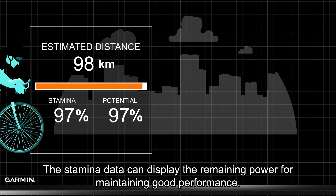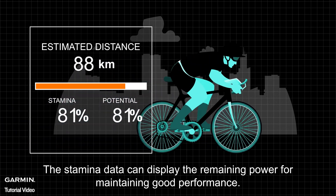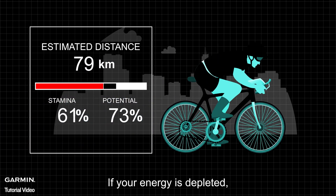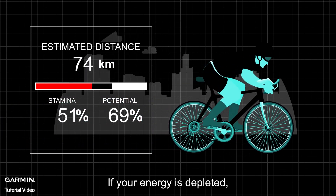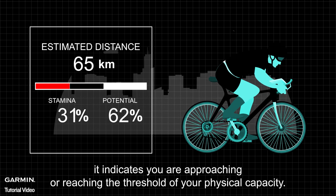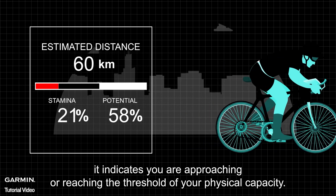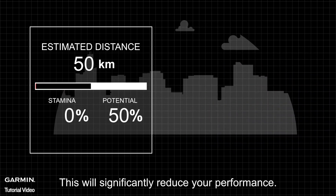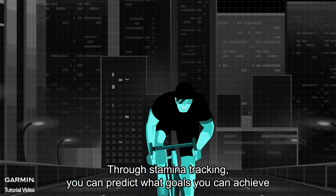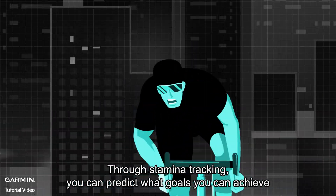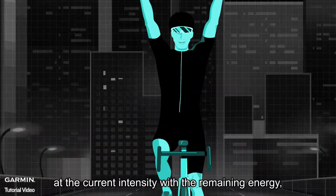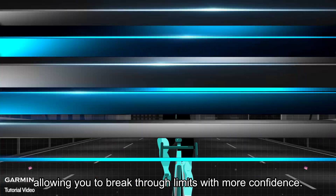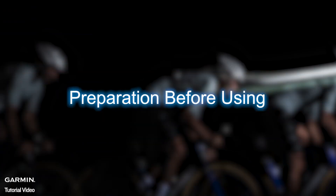The stamina data can display the remaining power for maintaining good performance. If your energy is depleted, it indicates you are approaching or reaching the threshold of your physical capacity, which will significantly reduce your performance. Through stamina tracking, you can predict what goals you can achieve at the current intensity with the remaining energy, allowing you to break through limits with more confidence.